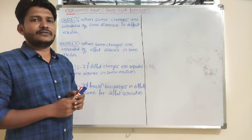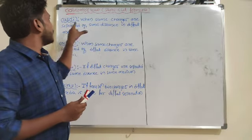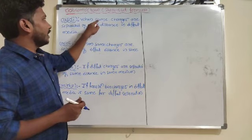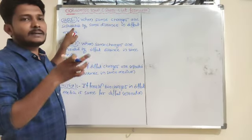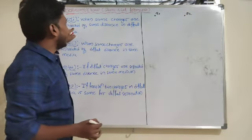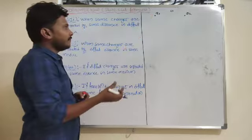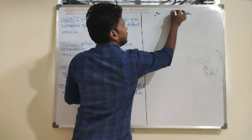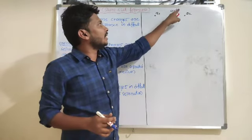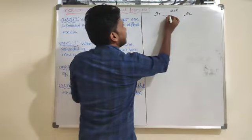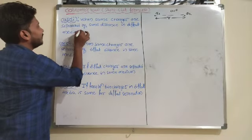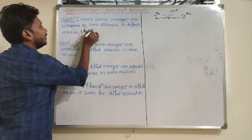For example, they will give two kinds of charges. When the same charges are separated by the same distance in different media, they may ask a question like this. They will give two charges separated by the same distance. I will take charge Q1 here and charge Q2 here. Initially I place them in an air medium, then I place an oil medium between the two charge particles. Separation is same, so here which thing is different? The dielectric constant value is different — K1 is not equal to K2.